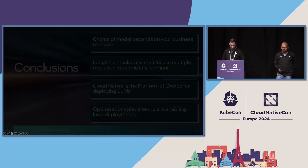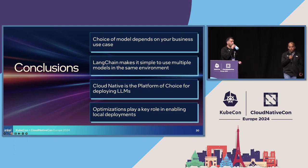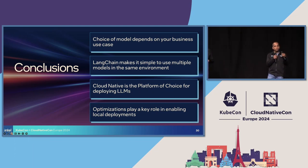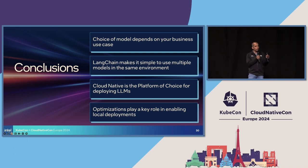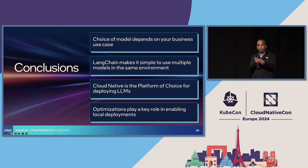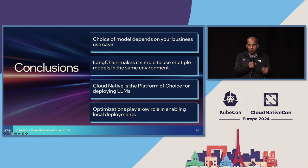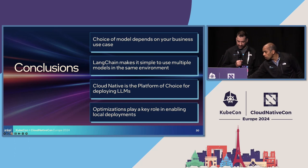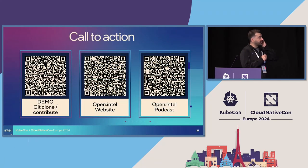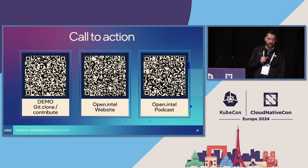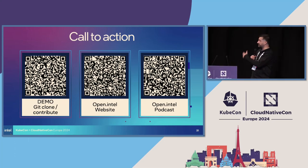In conclusion, the choice of model really depends on your business need. LangChain makes it simple to switch between multiple models, and we've talked about why cloud native is the platform of choice for running LLMs. Optimizations play a significant role and may tie you to specific hardware, but it's an important consideration. You can clone the GitHub repo, visit our site at Open at Intel, and we also have a podcast. Thank you for your time.